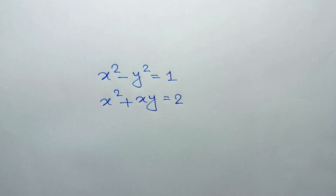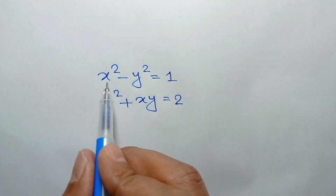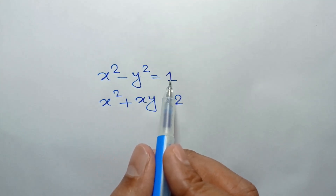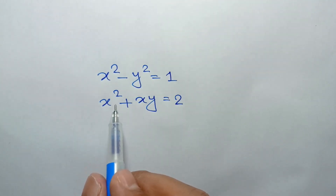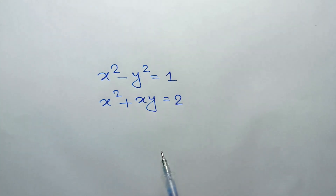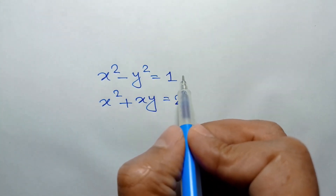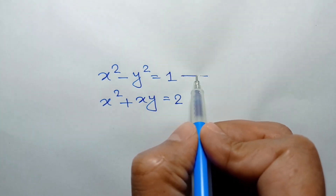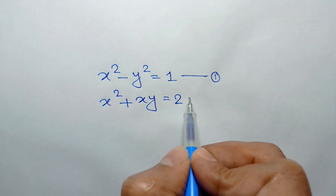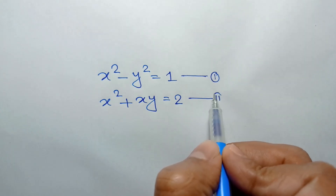Hi everyone. In this video I am going to show how to solve this system of equations: x squared minus y squared is equal to 1, and x squared plus x y is equal to 2. Let's call them equation number 1 and equation number 2.